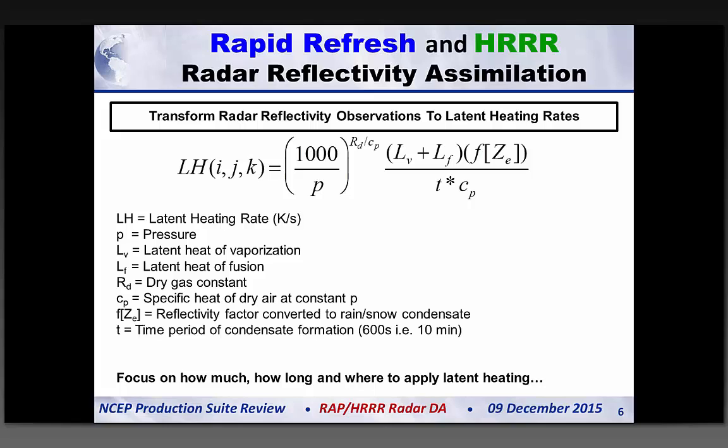The only equation I'll show is the mapping of reflectivity observations into a three-dimensional latent heating array — this is the model forcing function. We're inferring condensation from the presence of reflectivity observations and mapping that into a heating rate. We have variables we can control and tune, one of which is the timescale over which we assume the condensate formed. I'll focus now on how much, how long, and where we're applying these radar reflectivity-derived latent heating rates.